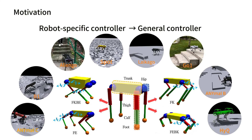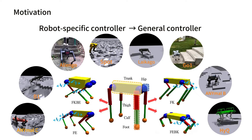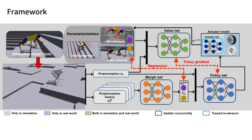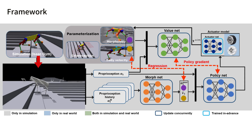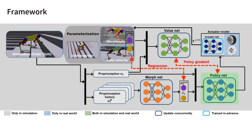Our general controller can implicitly identify their different physical attributes. The proposed controller is trained with deep reinforcement learning under a wide variety of quadrupedal robots with different morphologies. Even though the control policy cannot obtain the morphology-related parameters, it can still perceive them under the guidance of a network receiving privileged knowledge.